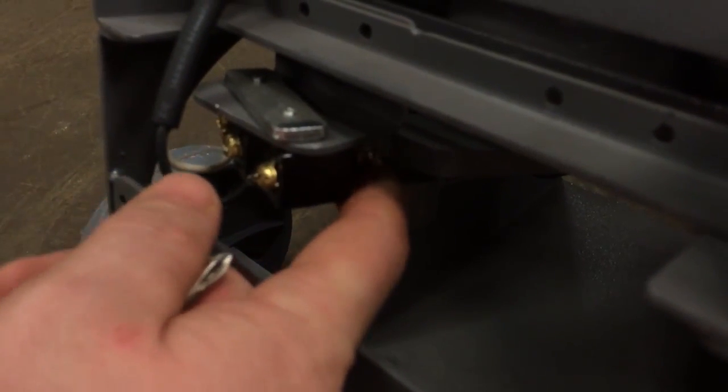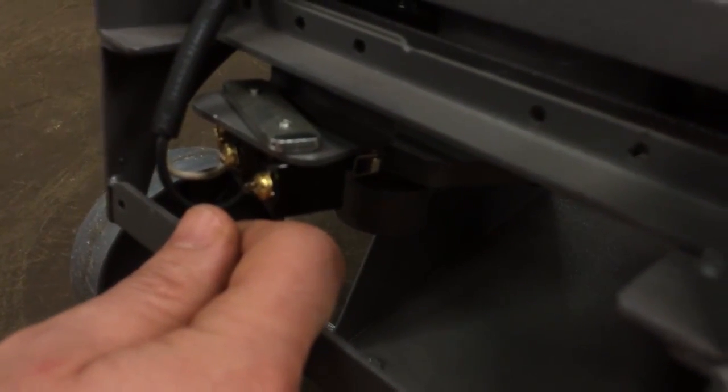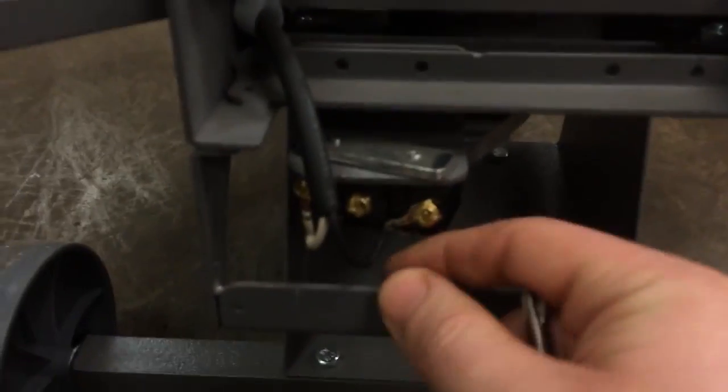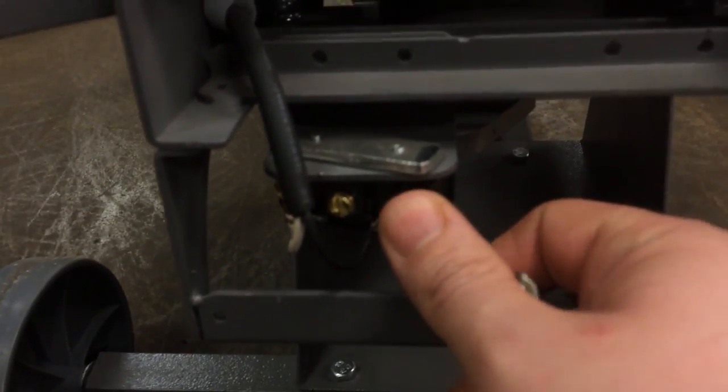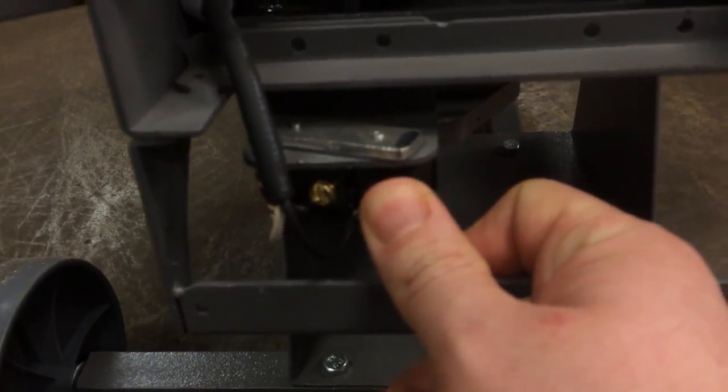What's happening is this switch sends power to the motor until this little roller arm on the backside here gets pushed in. It's not getting pushed in before that main spring takes over. So what we have to do is get this switch to adjust in a little bit.